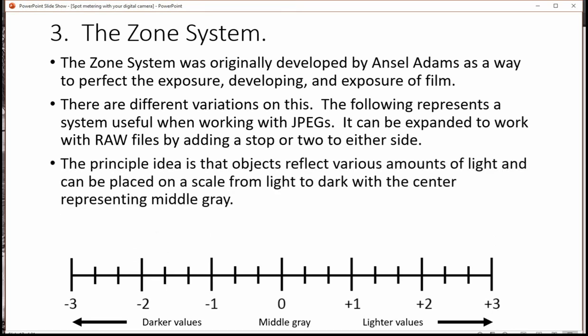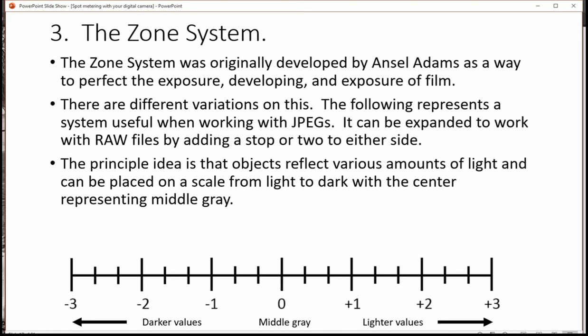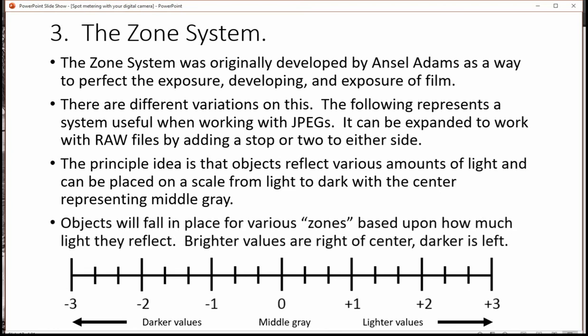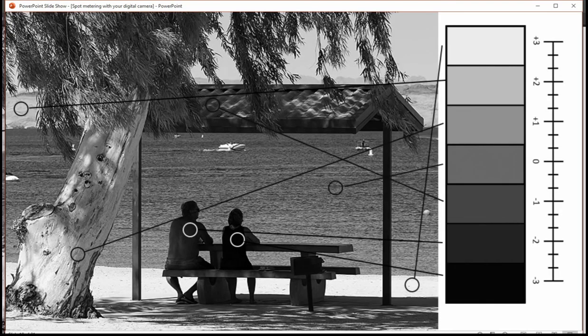The principal idea is that objects reflect various amounts of light and we can place those objects, those different shades, on a scale from light to dark with the center representing middle gray. Objects will fall in place for various zones based upon how much light they reflect. Bright values are right of center and dark values are left.